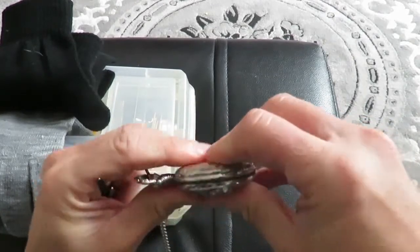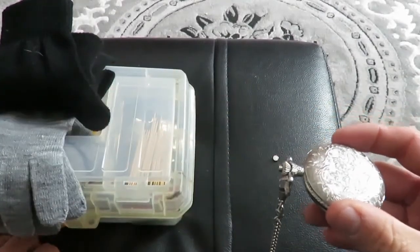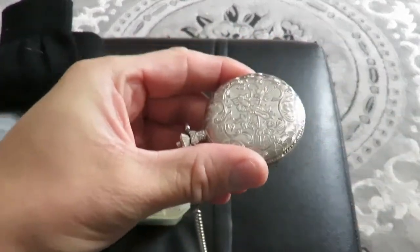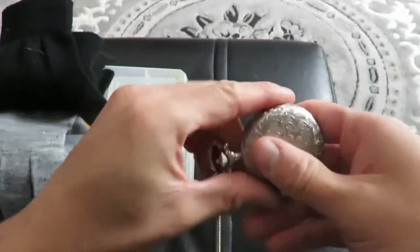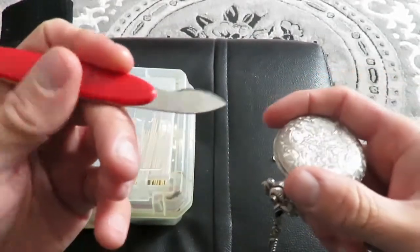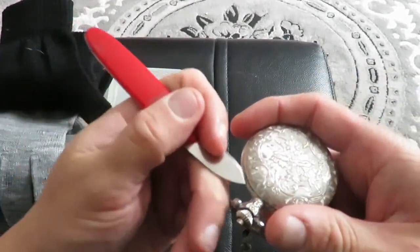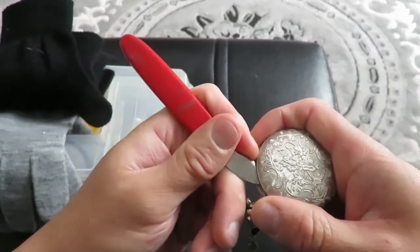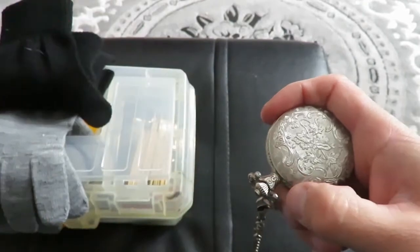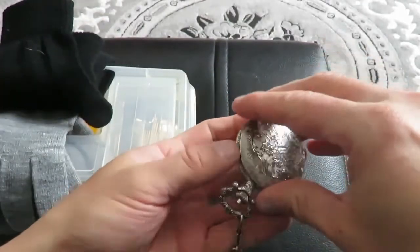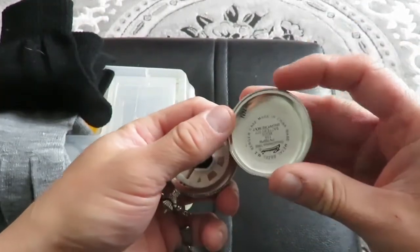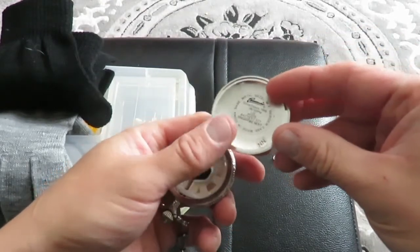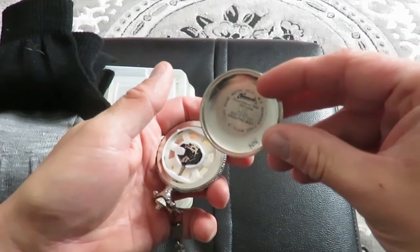You take your pry tool which has the flat end, you simply just stick it under and pry open your backing. Underneath your backing right here it says battery number 377, so that's the type of battery that you need.